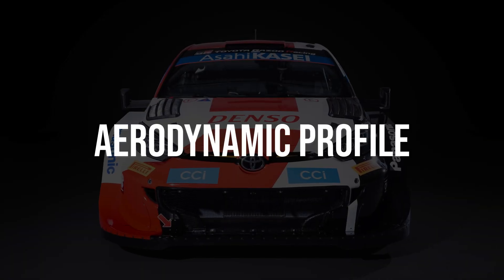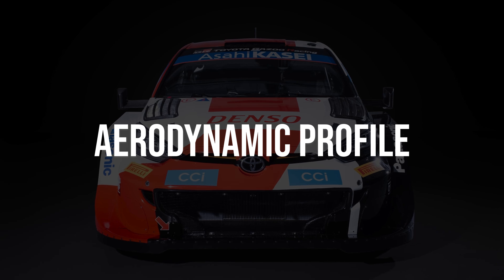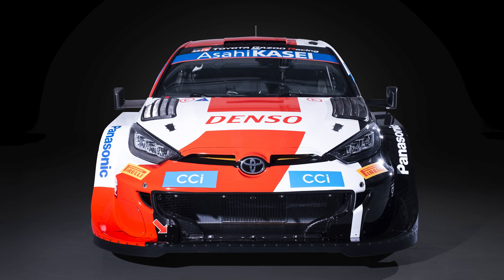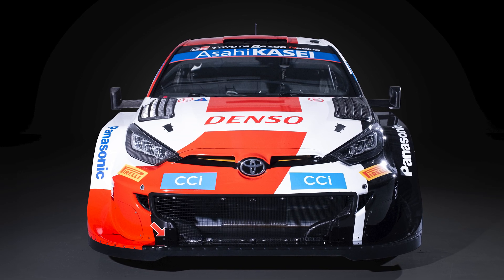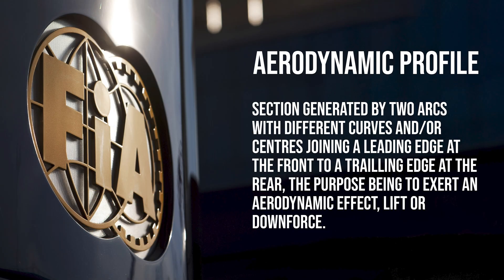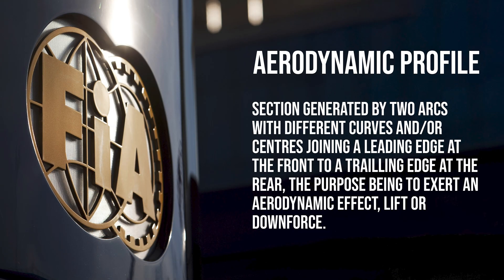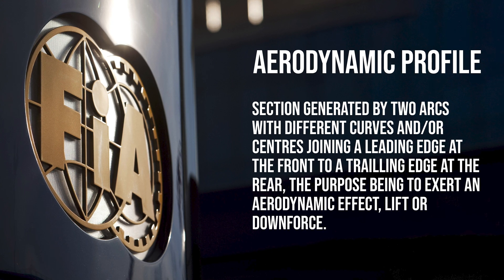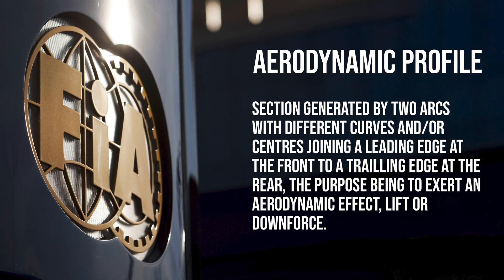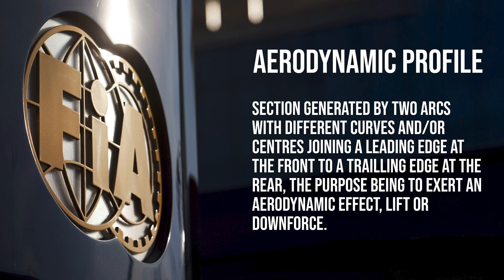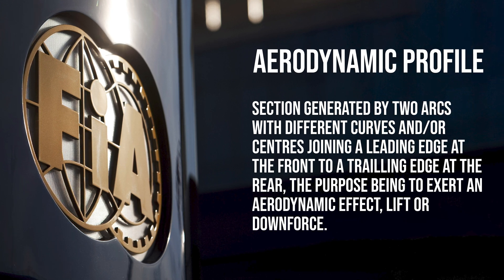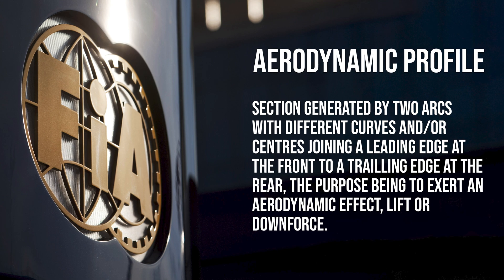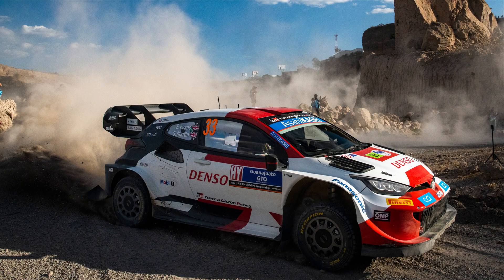Number one: aerodynamic profile. The aerodynamic profile was previously referred to as the wing profile in last year's version of the regulations. In the new regulations, it is described as a section generated by two arcs with different curves and/or centers joining at the leading edge at the front that meet at the trailing edge at the rear. The purpose of this is to exert an aerodynamic effect of lift or downforce. In the case of the Rally 1, and really any race car for that matter, this is strictly for downforce.